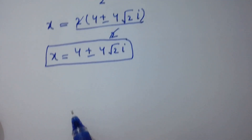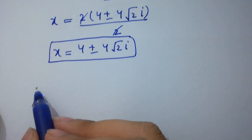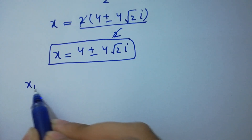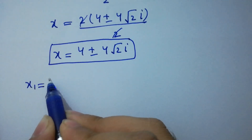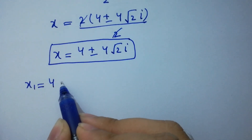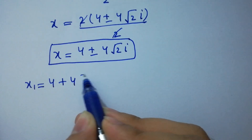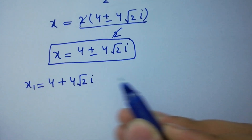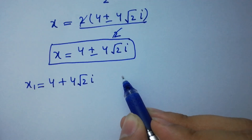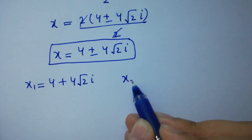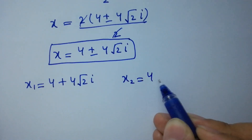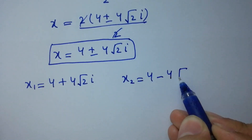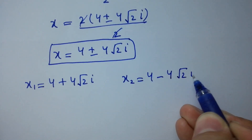Therefore x₁ equal to 4 plus 4 square root of 2 i, and x₂ equal to 4 minus 4 square root of 2 i.